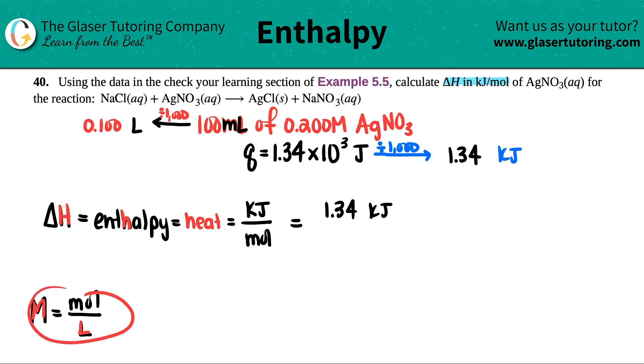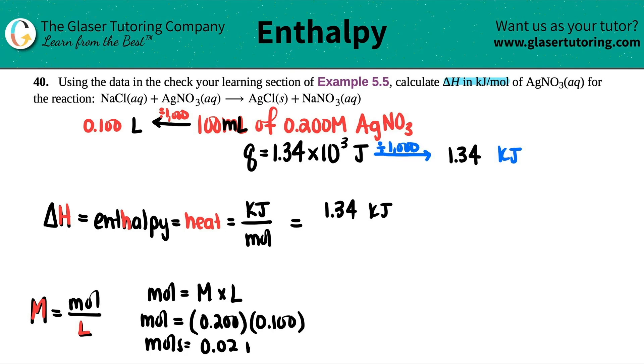Now I have the molarity, I have the liters, I can rearrange this formula to say that moles equals molarity times liters. The amount of moles is equal to 0.200, that's the molarity, times 0.100. So the amount of moles of AgNO3 is 0.02 moles.